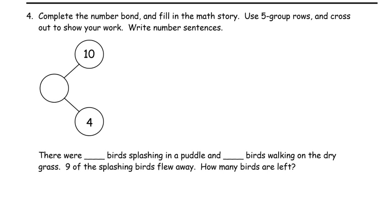We're completing the number bond and filling in the math story. Let's look at this number bond first. Complete the number bond first. Parts of 10 and 4 means we have to have a whole of 14. Use 5 group rows and cross out to show your work: 1, 2, 3, 4, 5, 6, 7, 8, 9, 10. And the 4 is 1, 2, 3, 4.